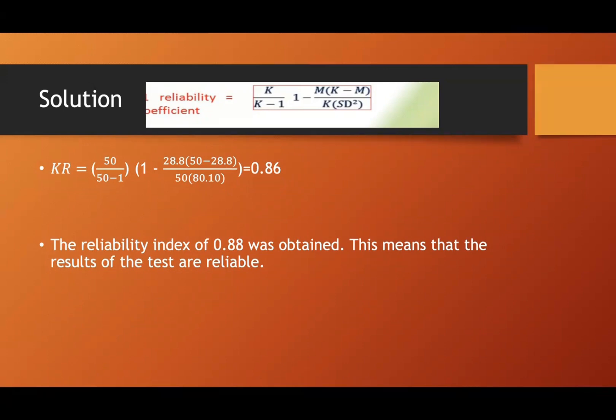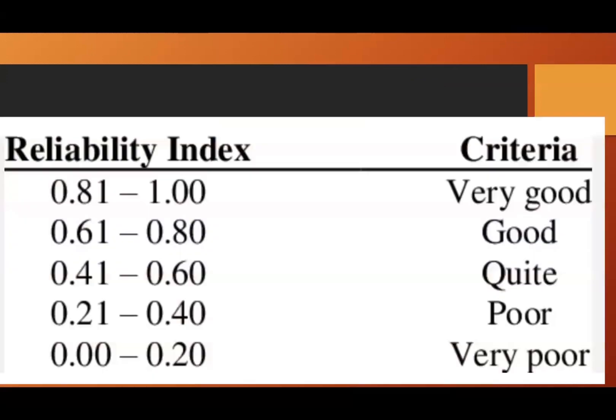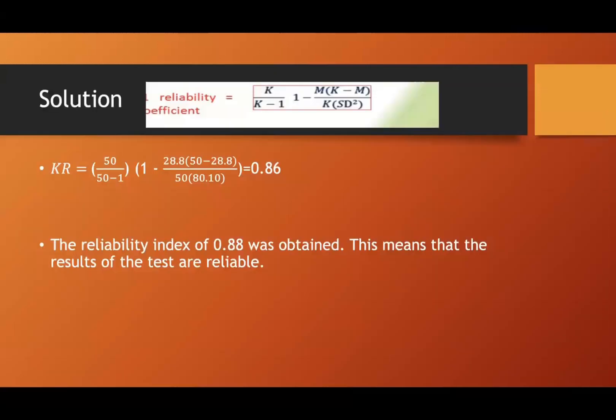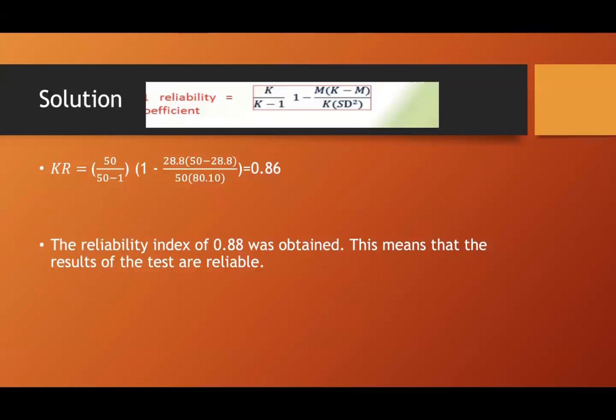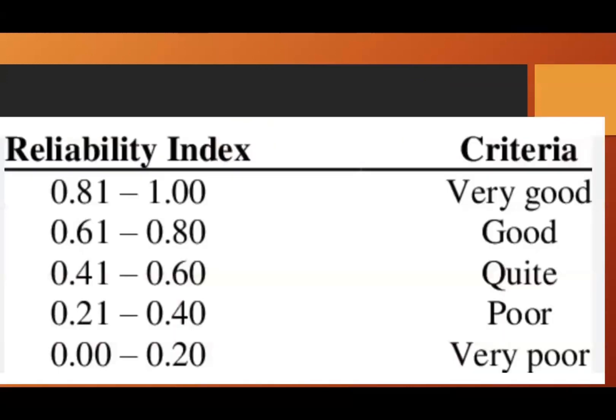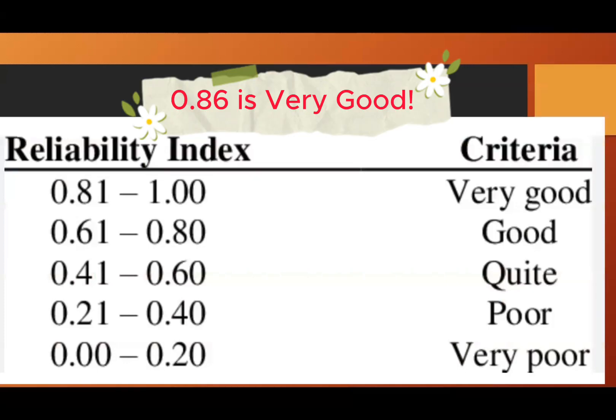So this means the test results are reliable. So we have the internal consistency. We have the reliability index. From 0.61 to 0.8, that is good. So this test is good. The internal consistency, meaning the students answer consistently. So we have their 0.86. You are going to interpret that one. 0.86 is very good.